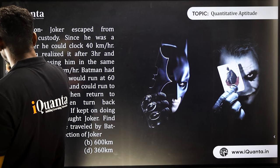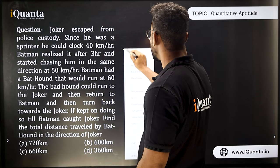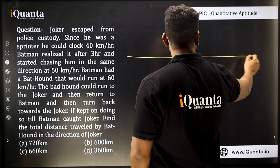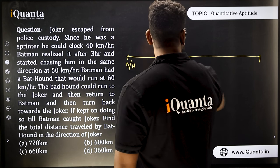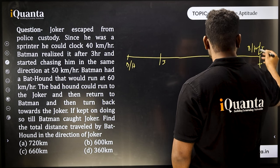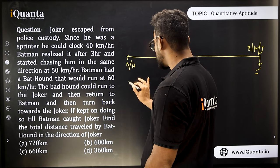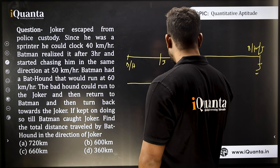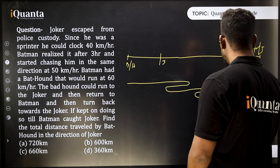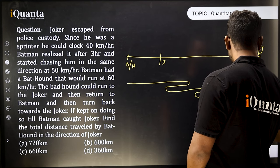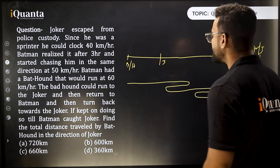Before solving, let's understand exactly what is happening. Initially, Batman and the hound are at the same position and the Joker is ahead. Let me track the hound's route with a diagram. The hound meets the Joker, comes back to meet Batman, goes to meet Joker again, comes back to Batman again — and keeps doing this until Batman, the hound, and Joker all meet at the same point.